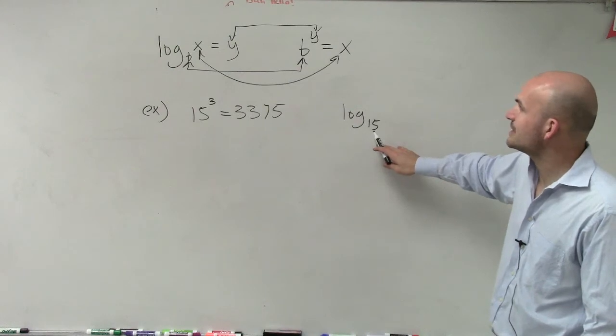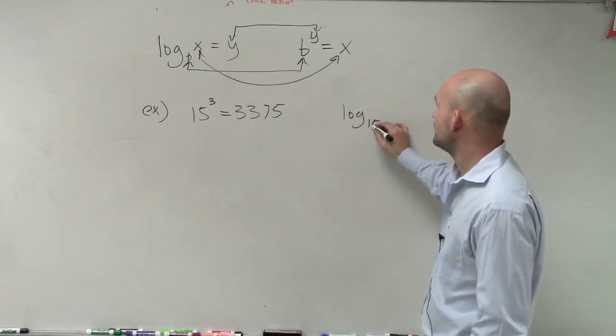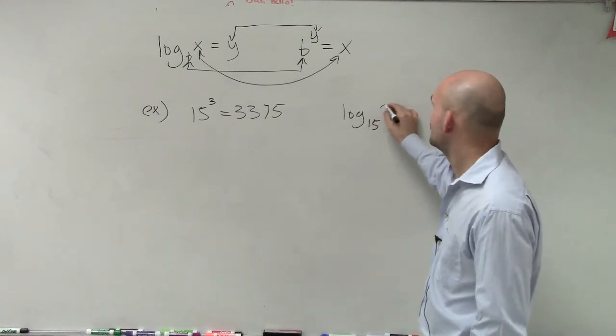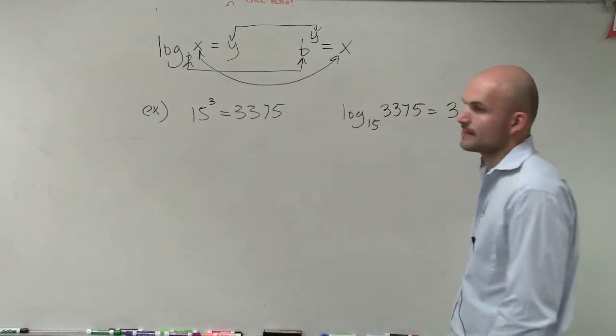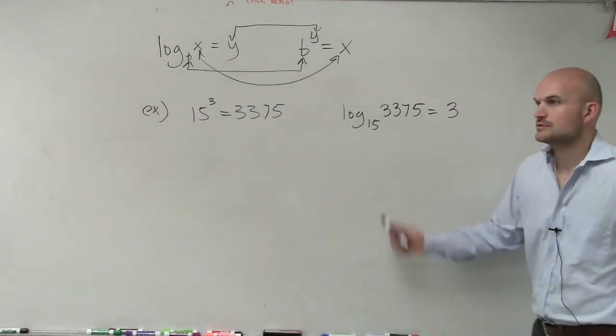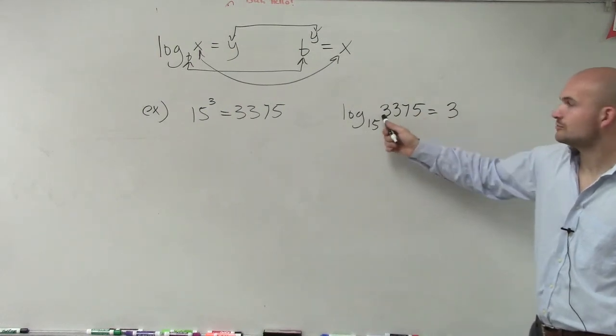Then you can say your x is going to equal—so log base 15 of 3,375 equals 3. So 15 to the third power equals 3,375.